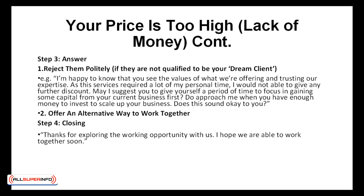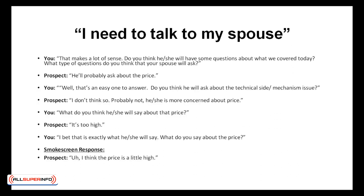When it comes to dealing with objections such as 'I need to talk to my spouse,' this is how the dialogue could play out. You say: 'That makes a lot of sense. Do you think he or she will have some questions about what we've covered today? What type of questions do you think your spouse will ask?' Prospect: 'He'll probably ask about the price.' You: 'Well, that's an easy one to answer. Do you think he'll ask about the technical side or the mechanism issue?' Prospect: 'Probably not — he or she is more concerned about price.'